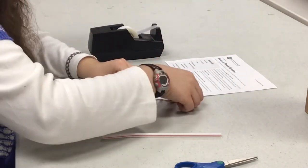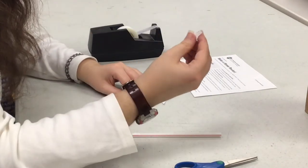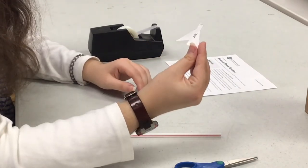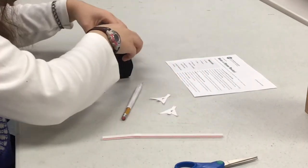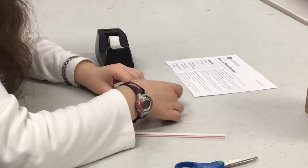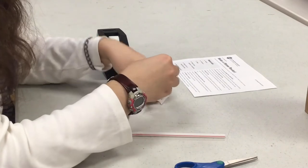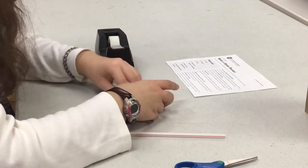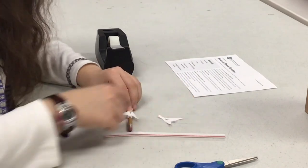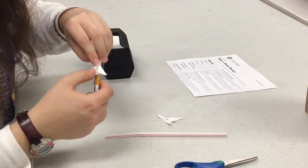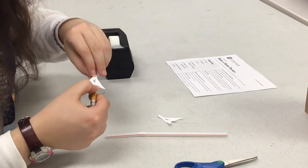Then, the other thing that I need to do in order to make the rocket is tape on these two fin pieces. I'm going to tape them on pretty carefully, but I also don't want the fins, the end of the fin, to come beneath the bottom of the rocket. So this is bad, this is good.